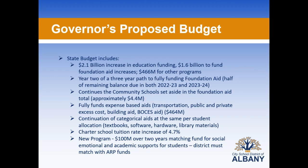There is continuation of all categorical aids at the same per-student allocation, and a charter school tuition rate increase of 4.7%. There is also a new program proposed of $100 million over two years — matching funds for social, emotional, and academic supports for students. The district would be obligated to match with ARP funds, and we are waiting to see if this becomes part of the fully executed budget for 2022-23 and what the guidance around that program may be.